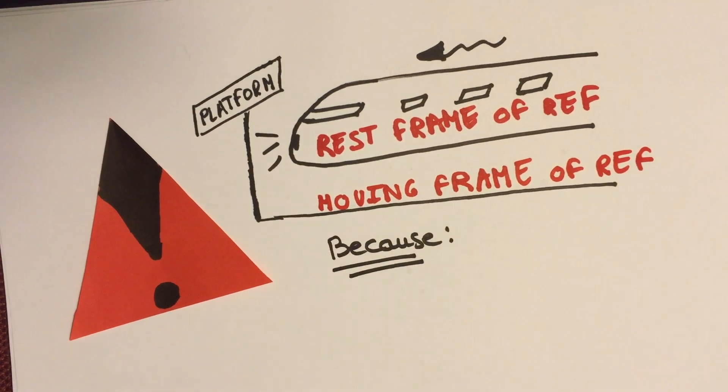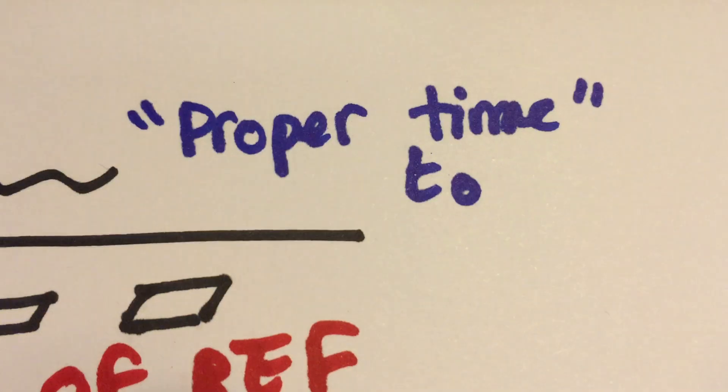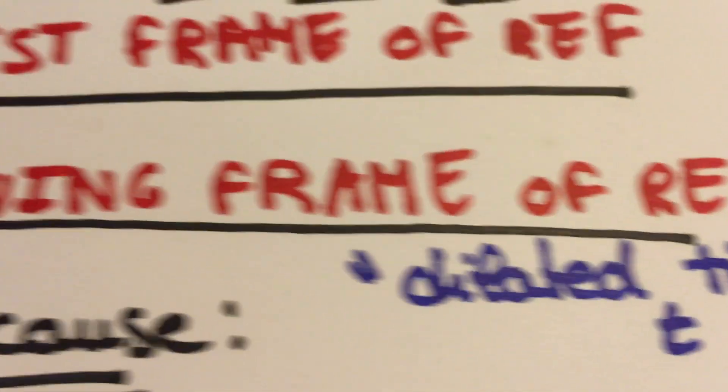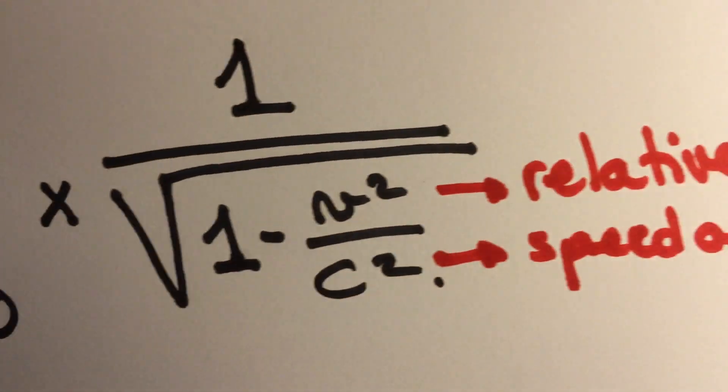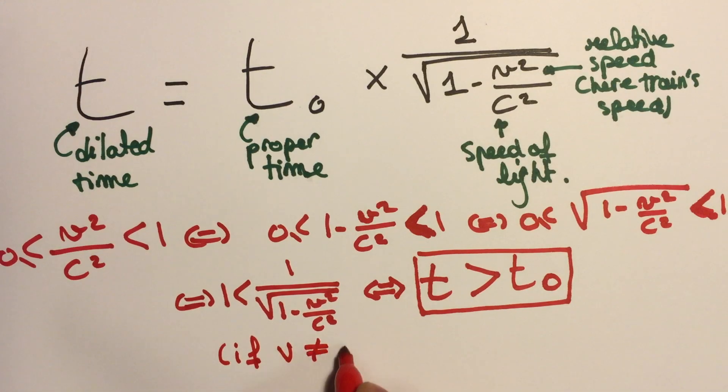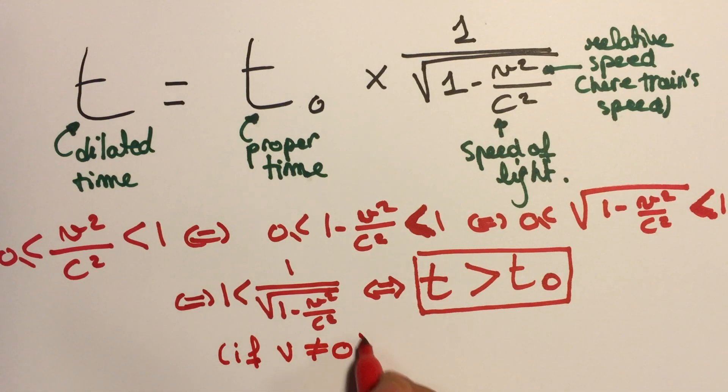Now let's define the proper time t0 relative to the train and the dilated time t relative to the platform. t and t0 are linked by this formula, and we can easily demonstrate that t is bigger than t0.